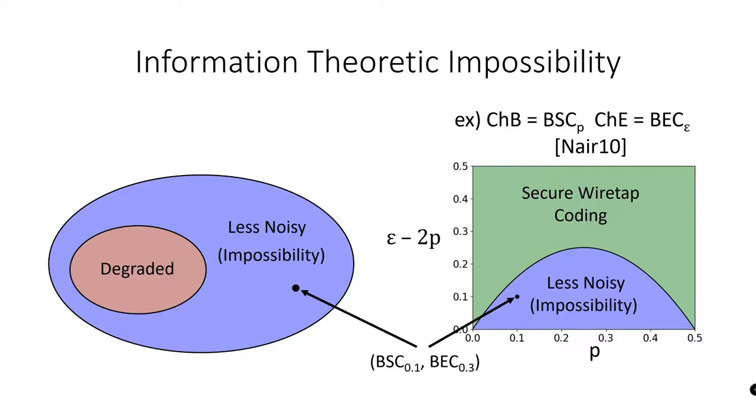As an example of a channel in this blue region, consider the case where Bob's channel is a BSC with flip probability 10%. Observe that if Eve's erasure channel has an erasure probability of 20%, then Eve can perfectly simulate Bob's channel by simply flipping each erased bit to a random value. This would yield a string of approximately 10% bit flips, just like the output of Bob's channel. Thus, a 10% BSC is a degradation of a 20% BEC.